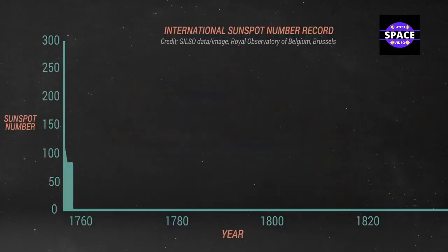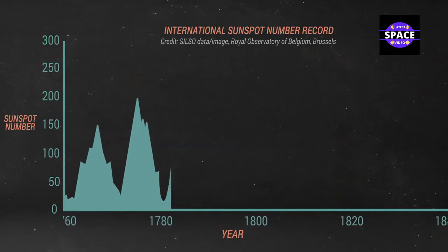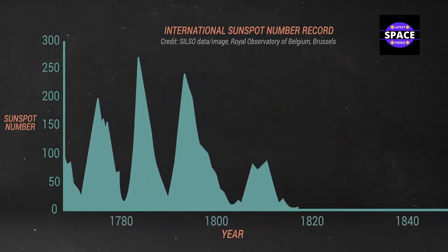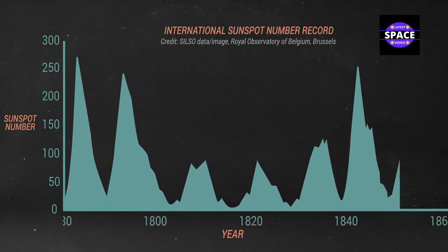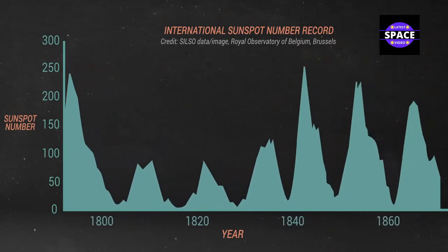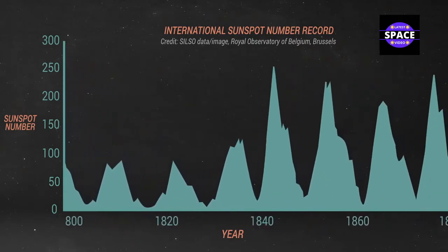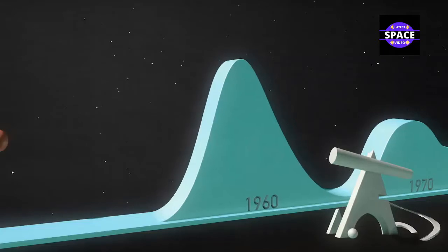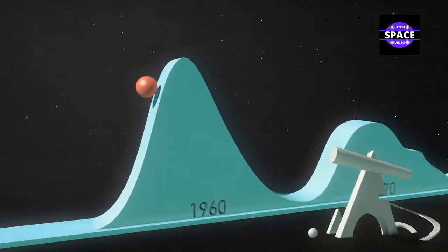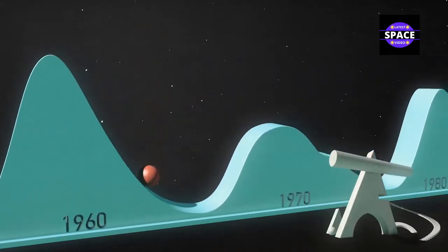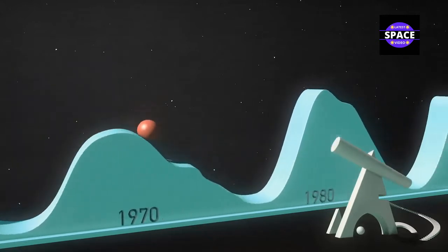The sunspot number record goes back farther than any other instrument, allowing scientists to analyze the Sun's behavior over many, many solar cycles. Sunspot numbers are collected from observatories around the world and are averaged. During every 11-year cycle, the number of sunspots rise from zero to a peak and then go back down to zero again.